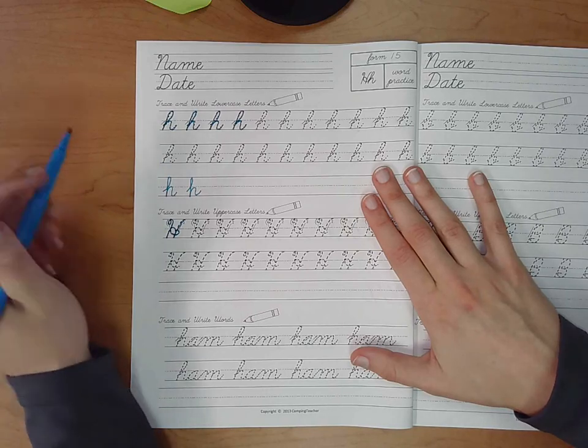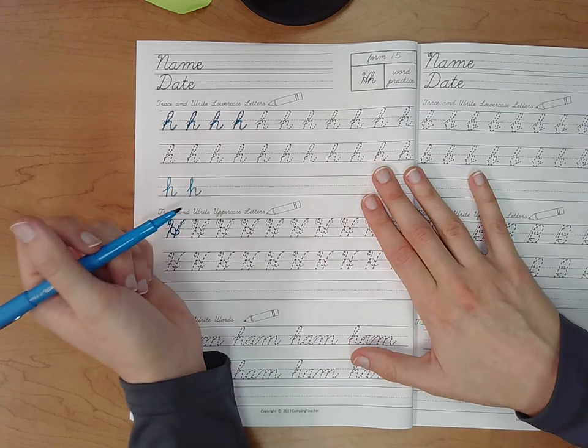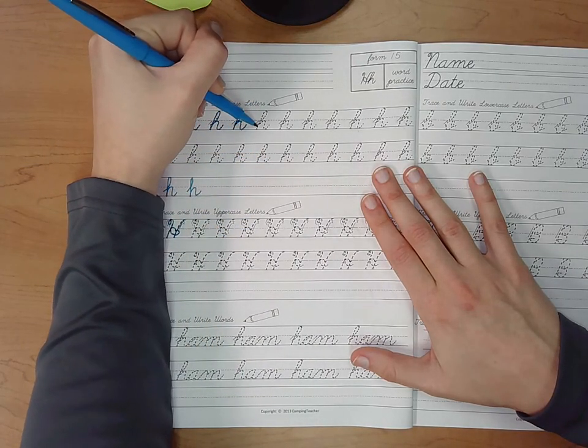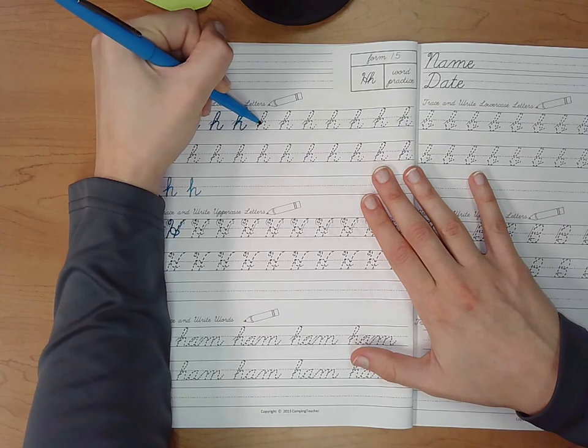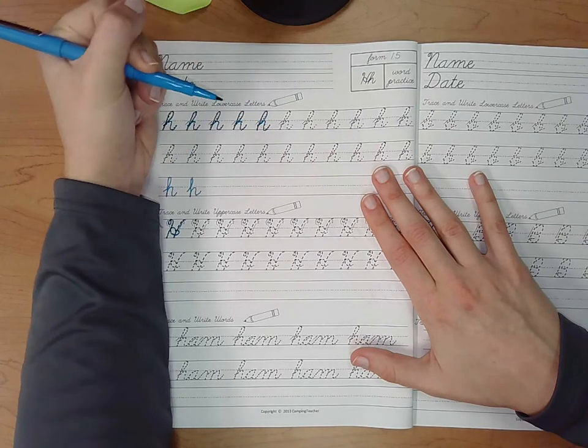Okay, so now for our lowercase h, which is on form 15. To do our lowercase h, we want to start in the center point of the bottom half. You come up on the right, down on the left, up, make a hump, and into an h.